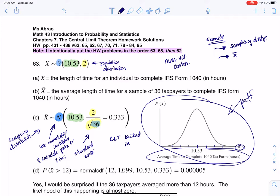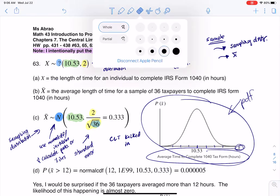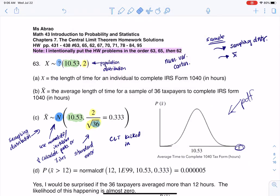Would you be surprised if 36 taxpayers finished their 1040s in an average of more than 12 hours? Just looking at the graph, if I'm thinking of 12 hours and the number under the peak, I'm going to add about 0.33, that would be something like 10.86, so I think 12 is going to be way down here on the x-bar axis. I think that would be rare, but let's go get the number for it.